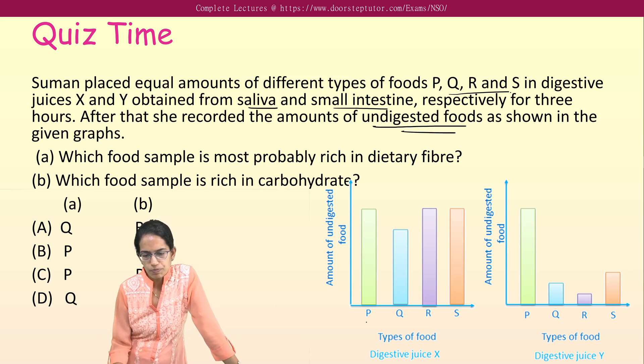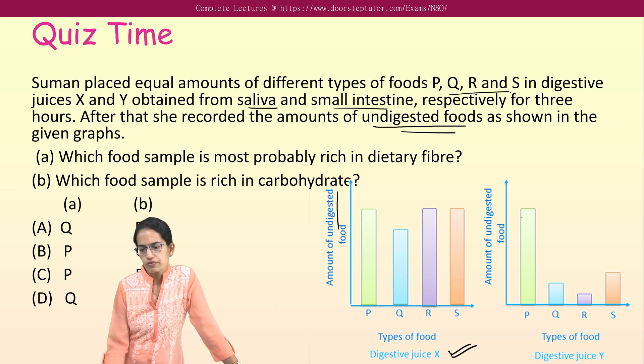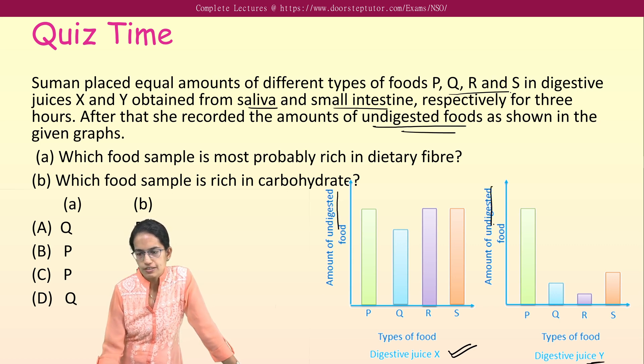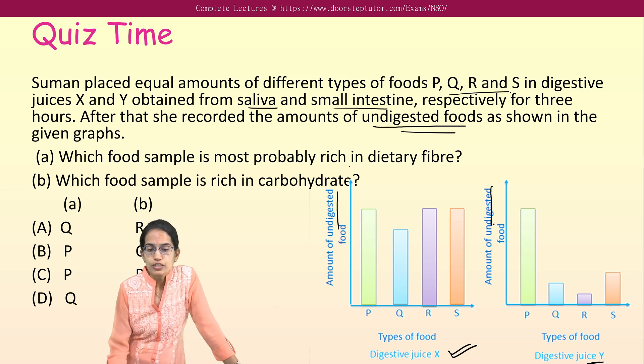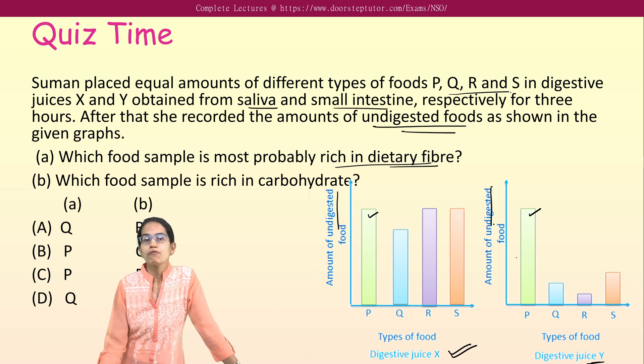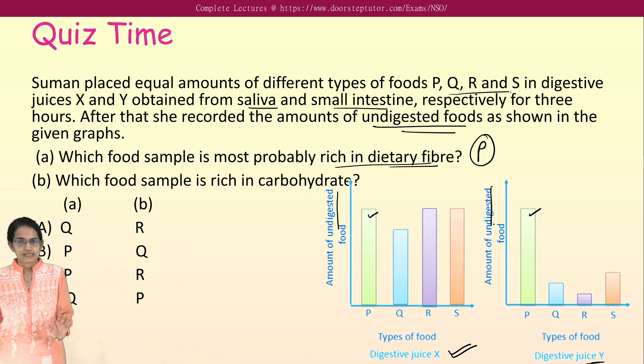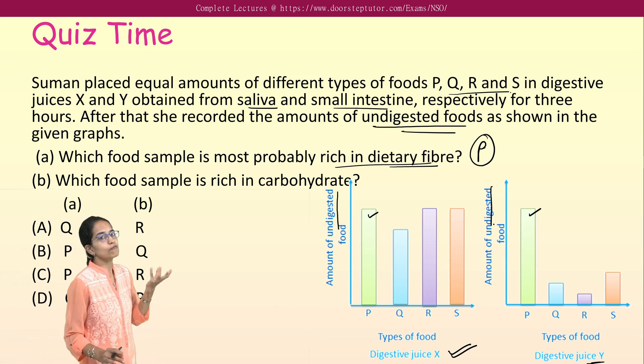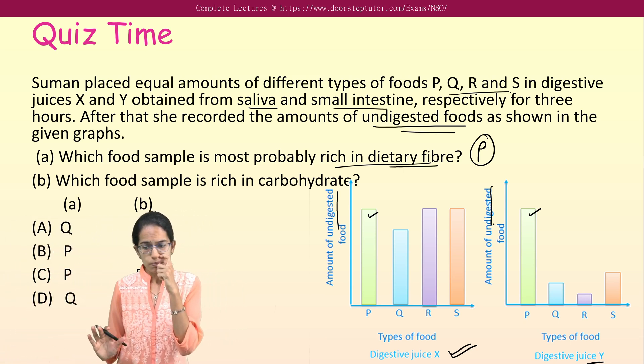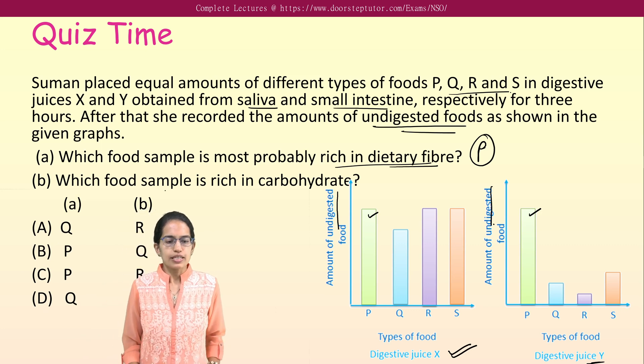Now after certain amount, the undigested food is explained. P has this amount of undigested food with juice X. P, Q, R, and S, the amount of undigested food is given here. And with juice Y, the amount of undigested food is given. Which of the food is most rich in dietary fiber? The amount of undigested food remains same for P food type. That means P is rich in dietary fiber. It has not been digested either in saliva or in small intestine. It remained the same. Why? Because it is dietary fiber. Fiber was not digested. So P is the right answer for fiber.